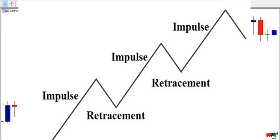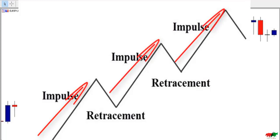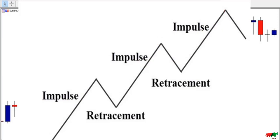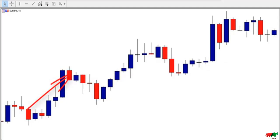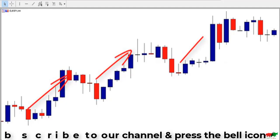So what is an impulsive move? Impulsive moves are those that push prices higher in an uptrend market and drive prices lower in a downtrend market. Look at this example — this is the Euro GPY four-hour chart. The market is trending up. This is the first impulsive move, this is the second impulsive move, and this is the third one.